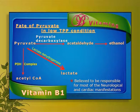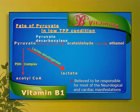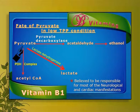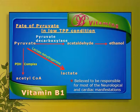It is important to look at the fate of pyruvate, a very important intermediary metabolic product, in a low TPP background. In low TPP conditions, the PDH complex and pyruvate decarboxylase are functioning sub-optimally. In this background, another enzyme — lactate dehydrogenase — is upregulated, which forms lactic acid from pyruvate. Scientists believe that this increased cellular lactic acid concentration is responsible for the neurological and cardiac manifestations of beriberi.